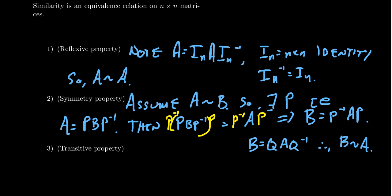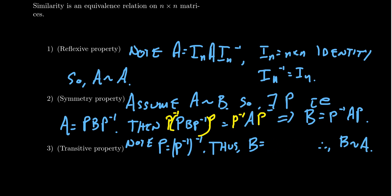That's not exactly what we need — we need Q A Q inverse, so we need the inverse on the right-hand side. Note that P is equal to P inverse inverse. Thus, our matrix Q is actually just going to be P inverse. So we get B equals P inverse A (P inverse) inverse. This proves the symmetric property: if A is similar to B using matrix P, then B is similar to A using the inverse. We are able to prove the symmetric property because we have inverse matrices — non-singular matrices are invertible.